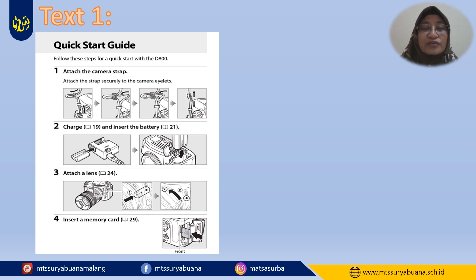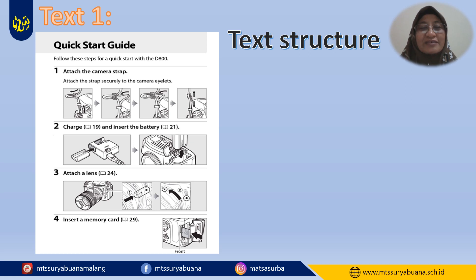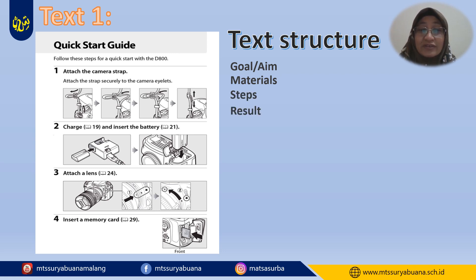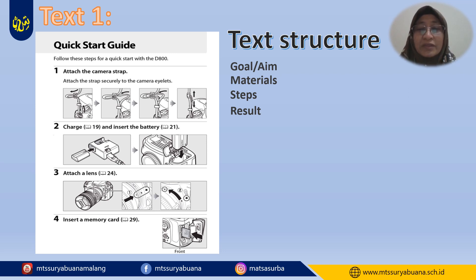Now let's look at some examples of manual or instructions. Do you still remember the procedure text we discussed previously — the recipe? Do you remember the text structure? They usually have a goal or aim, materials, steps, and sometimes a result. In a manual or instructions, we sometimes have an aim or goal, but sometimes we don't have materials. And of course we have steps, and sometimes a result.